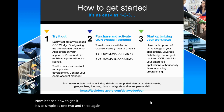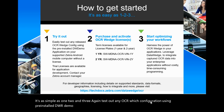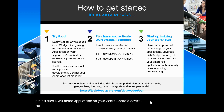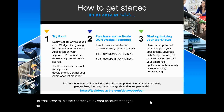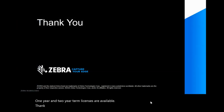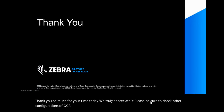Now let's see how to get it — it's as simple as one, two, and three. Test out any OCR Wedge configuration using the pre-installed DW Demo application on your Zebra Android device. For trial licenses, please contact your Zebra account manager. For vehicle identification number, one-year and two-year term licenses are available. Thank you so much for your time today — we truly appreciate it. Please be sure to check out the other configurations of OCR Wedge. Thank you.